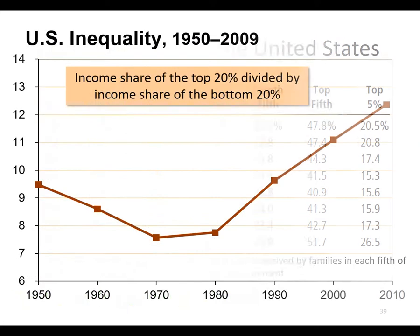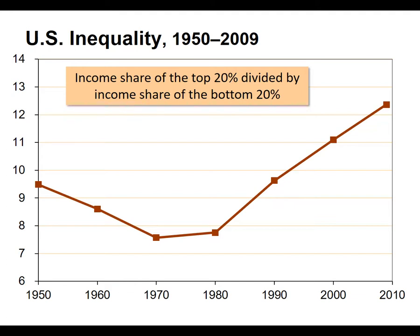One way to measure inequality is to take the income share of the top 20% divided by the income share of the bottom 20%, often called the Gini coefficient. We can see that inequality in the United States has been increasing. This is considered a problem if you value equality and want socially mobile people — you want people to be able to live the American dream. It might also not matter if you think people just aren't working hard enough — that's the other way to look at it.